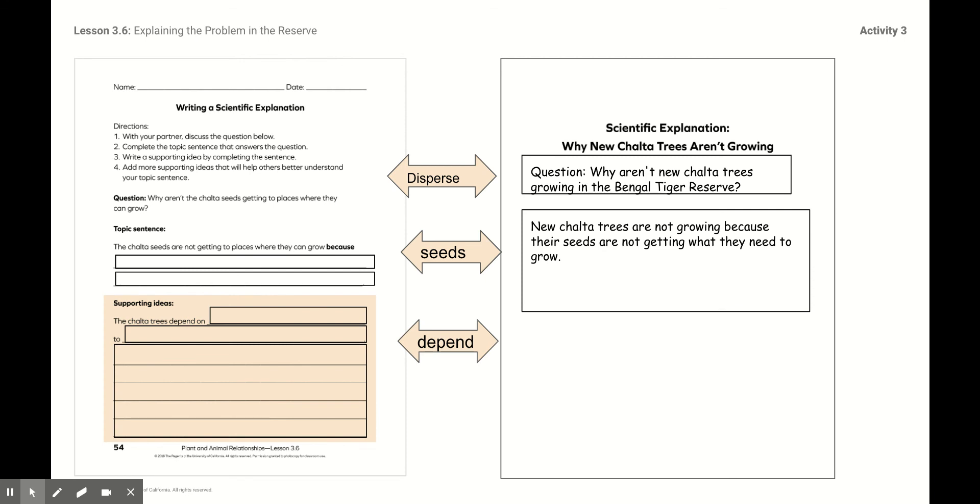Here's what the worksheet looks like. I put a graphic organizer here for you to help you with your scientific explanation. So the first part of this is to think about your topic sentence which says, the chalta seeds are not getting to places where they can grow because... I put some key words here in the middle on the arrows for you to see them and use them in some way within your writing. So you need to think about what would support your idea. What would support your topic sentence? Maybe if you said something about the animals and the fence, maybe you can prove that in the yellow box below that says, the chalta seeds depend on... On what? What do they depend on? Who do they depend on? In order to grow and to be in new places.